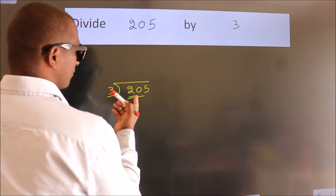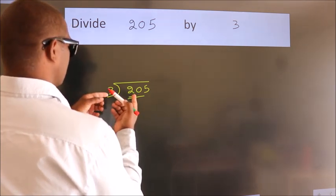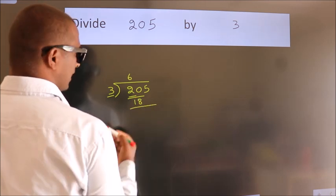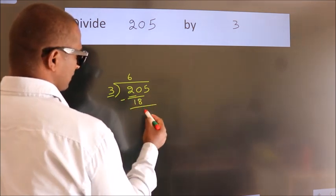A number close to 20 in the 3 table is 3×6=18. Now we should subtract. We get 2.